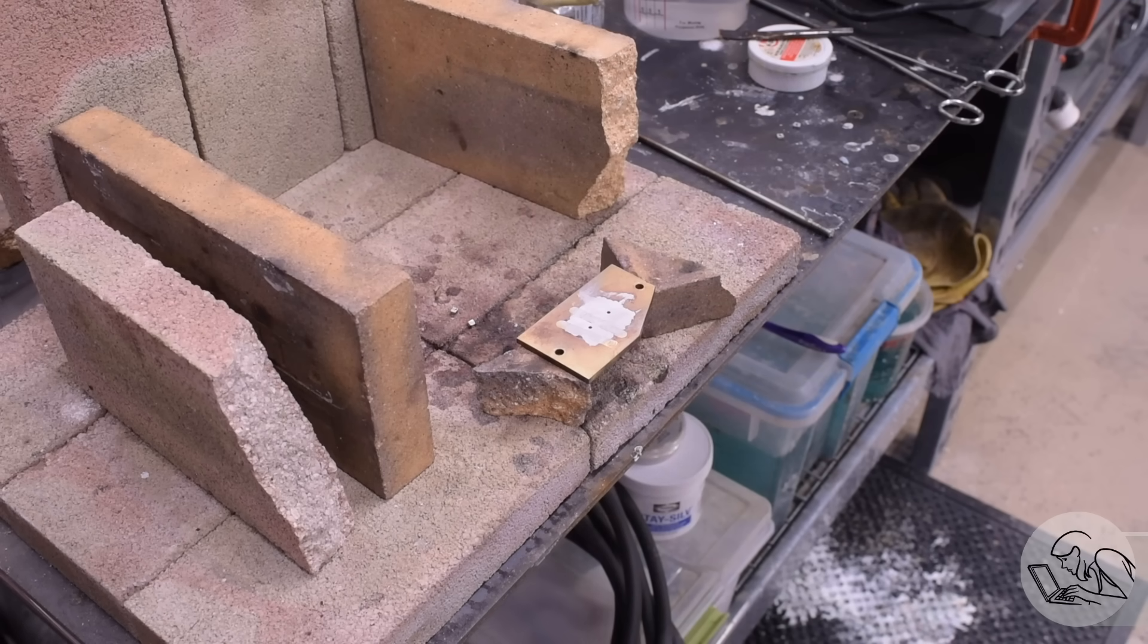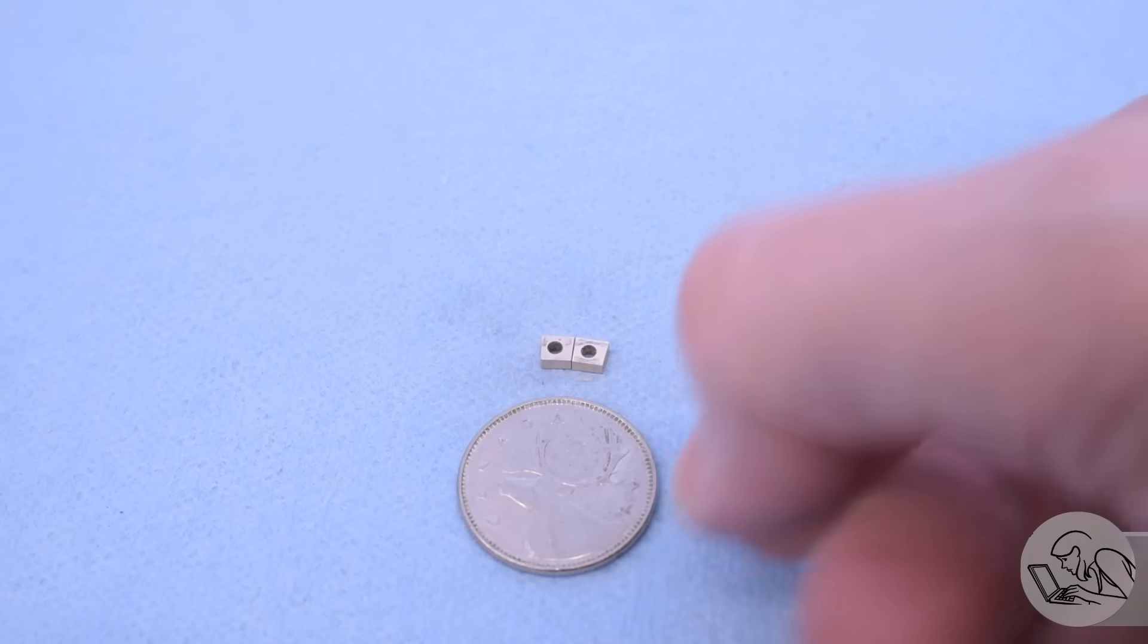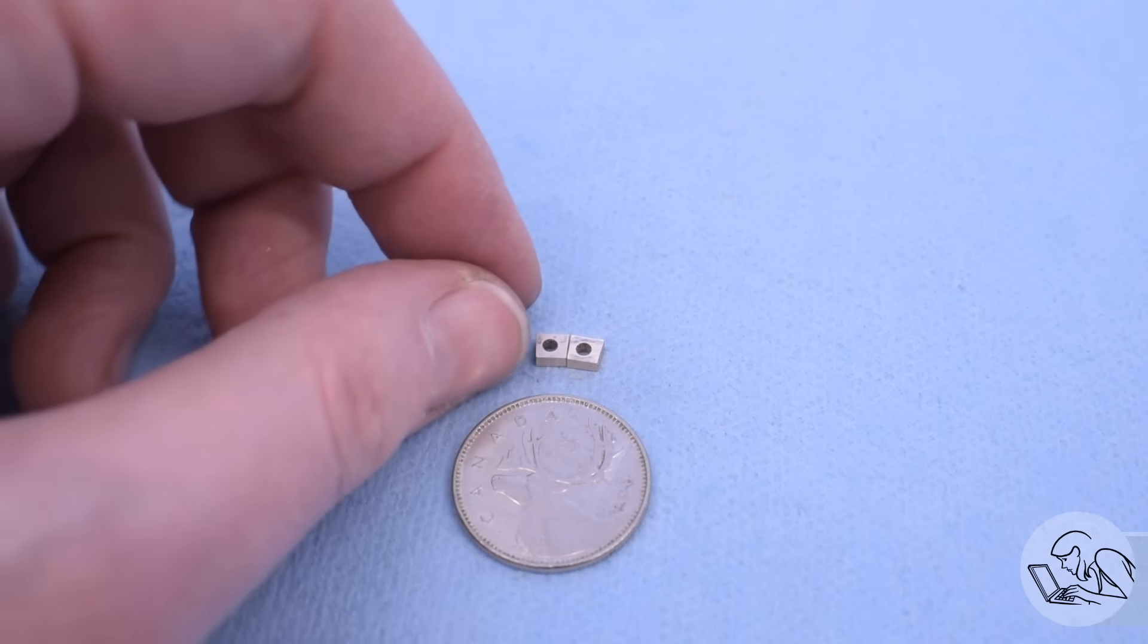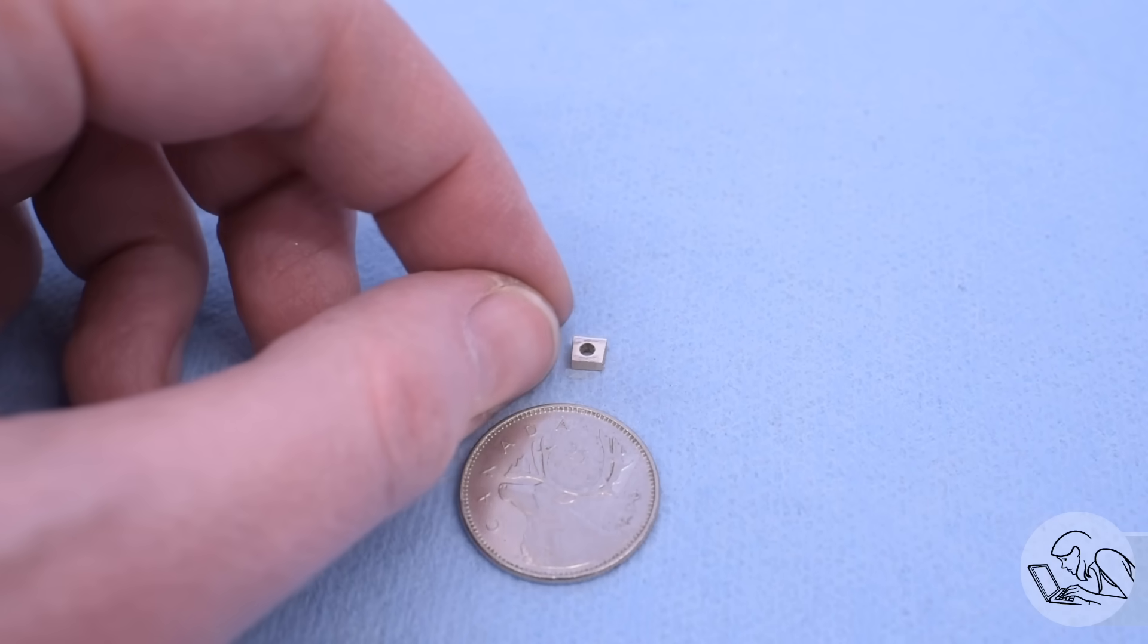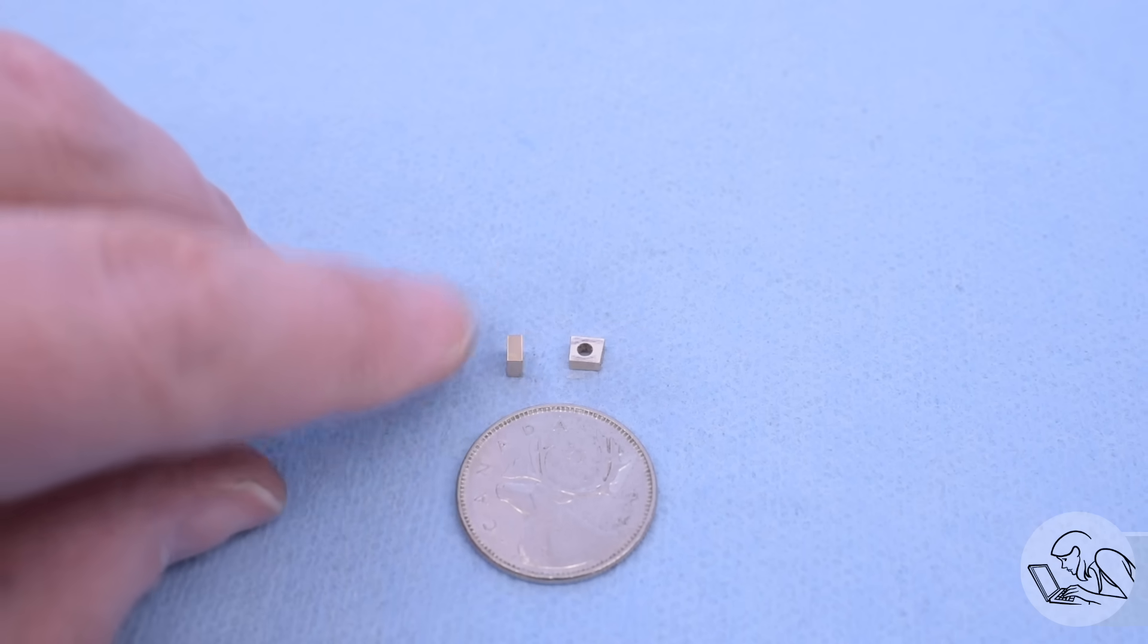Then of course the link blocks have a layer of solder on the back of them that we don't want there. So that I removed with some very careful needle filing, trying to just remove the solder and not get into the bronze itself, and that seemed to go okay.